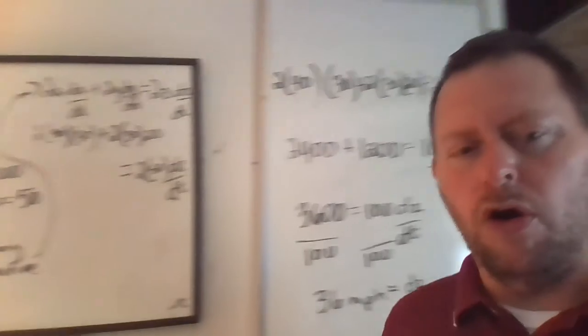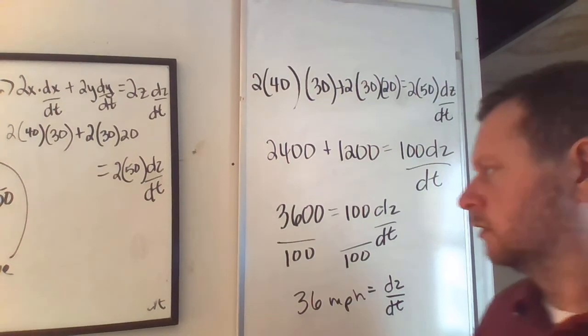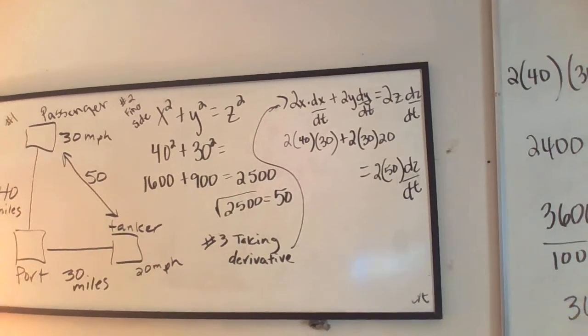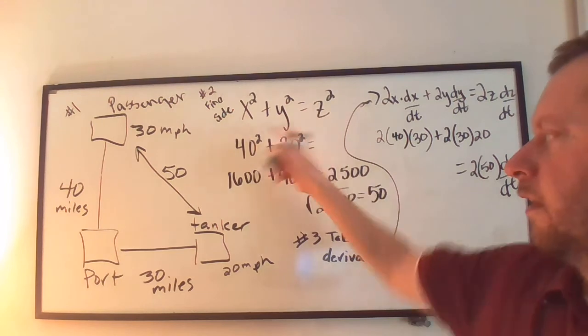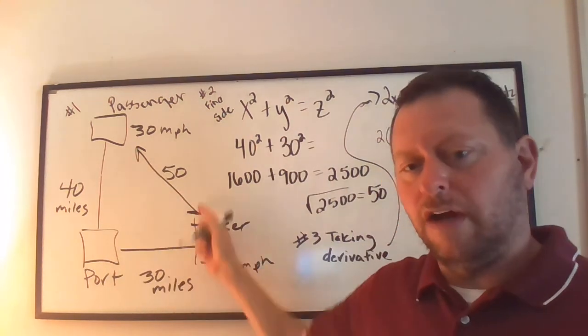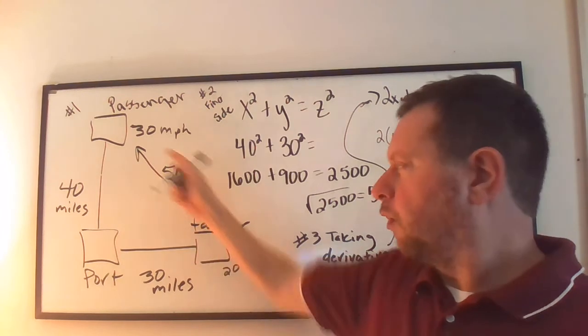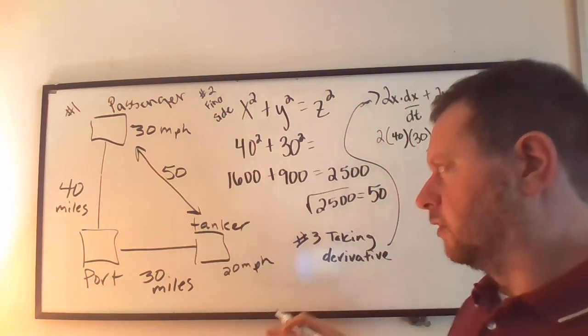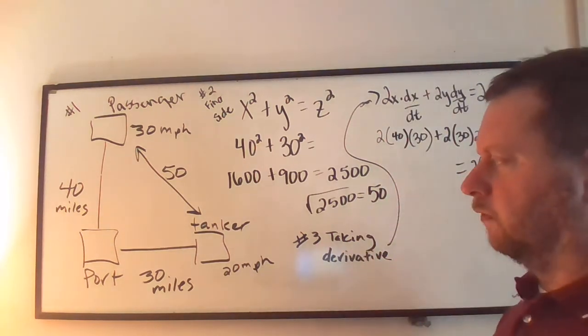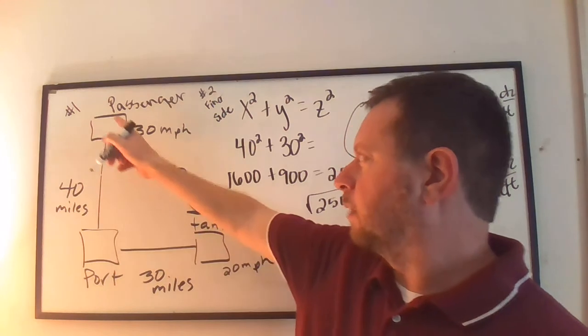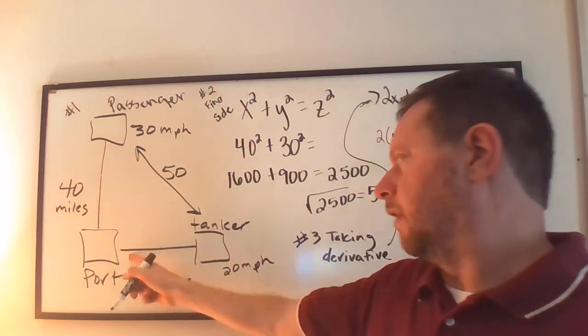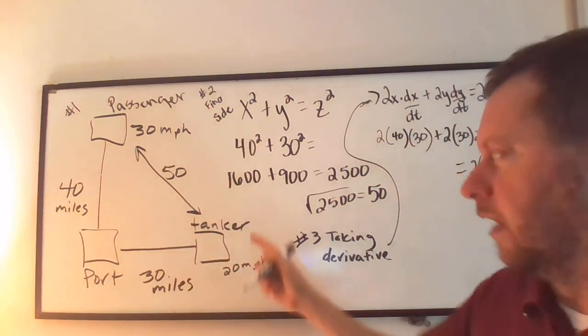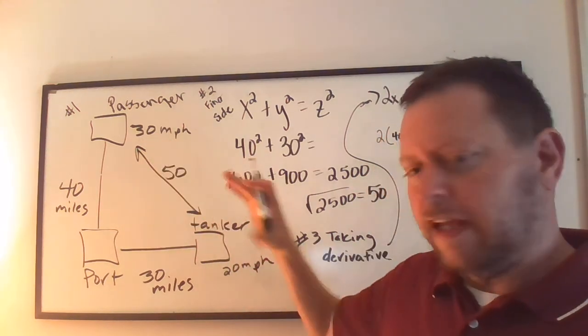Let's go through that again. We set up the Pythagorean theorem because we're making the shape of a triangle. One part of the triangle is what we're looking for. Each side has two parts. It's 40 miles and 30 miles per hour, that's how fast this is moving. This is 30 miles and 20 miles per hour is how fast that is moving. We can find 50 if everything stays still.